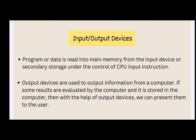Program or data is read into main memory from the input device or secondary storage under the control of the CPU. Output devices are used to output information from the computer — if results are evaluated and stored, with the help of output devices we can present them to the user.